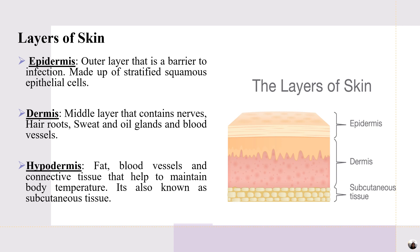Hypodermis contains fat cells, blood vessels, and connective tissue that helps to maintain body temperature — that is, thermoregulation. It is also called subcutaneous tissue.